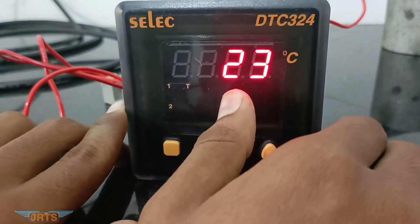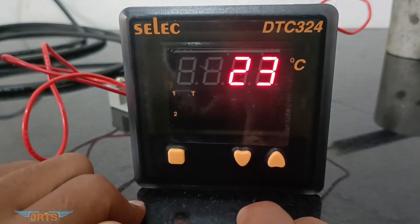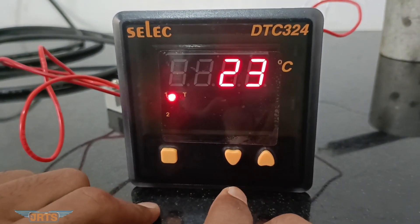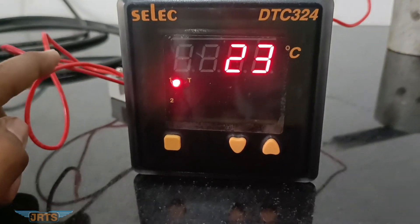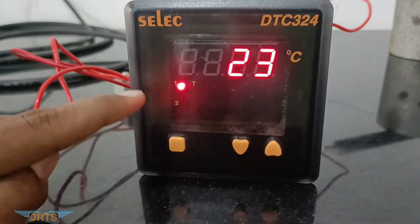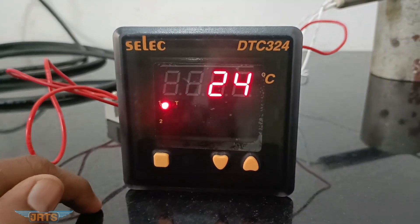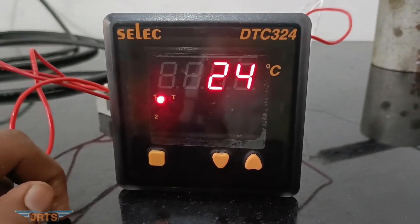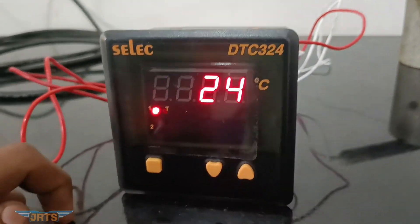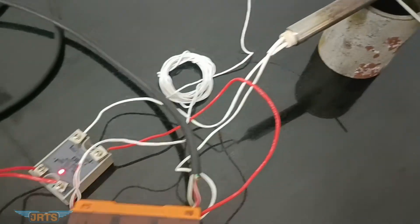Now it shows the ambient temperature at 60 degrees Celsius. Let's see what's happening. Now the output is on so the LED is in on condition and the temperature is now increasing gradually.